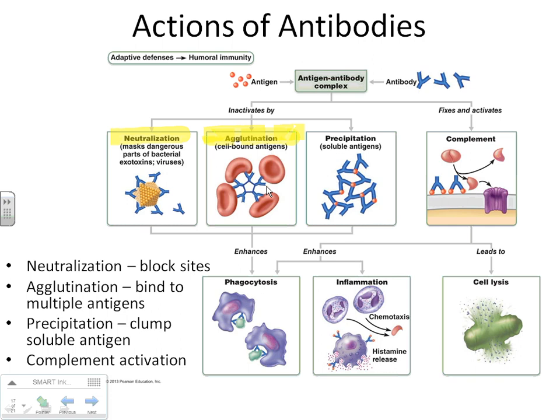The third process is precipitation. If a bunch of antibodies clump together, the big clump may precipitate out of solution — just falling out. It can't do anything to you then. Agglutination and precipitation are very similar — both make giant clumps, which allows something else to see the giant clump and work on it. A giant clump is easier for phagocytic cells floating in your blood to find than a single tiny bacterium.